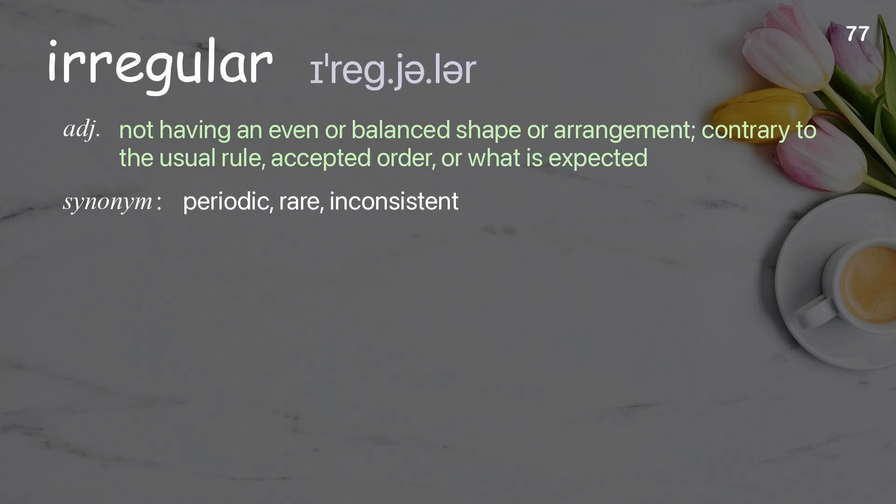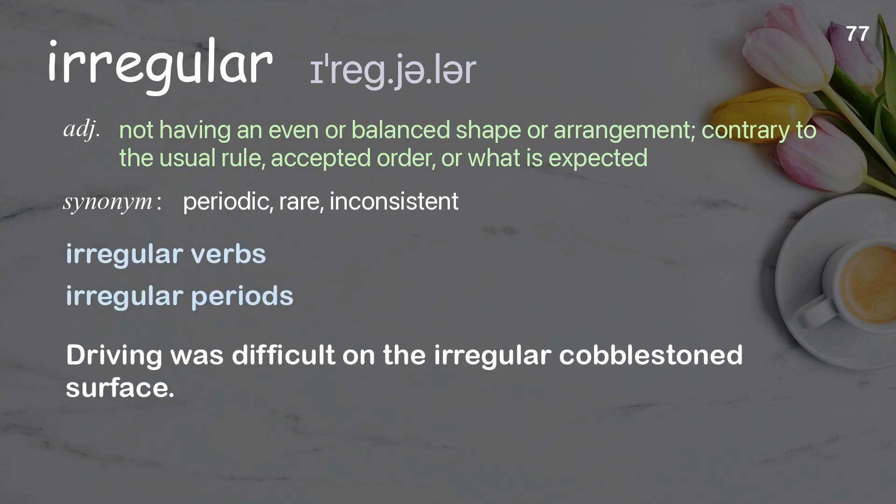Irregular: not having an even or balanced shape or arrangement; contrary to the usual rule, accepted order, or what is expected. Examples: irregular verbs; irregular periods. Driving was difficult on the irregular cobblestone surface.